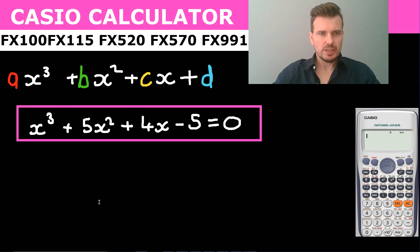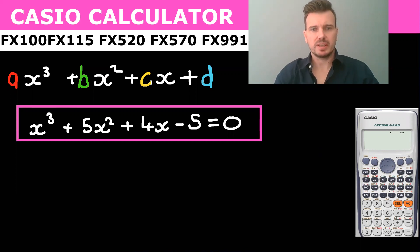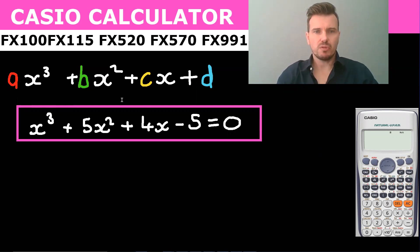So we have a cubic equation, which is ax³ plus bx² plus cx plus d. This is the format that the Casio recognizes. So your a is the number in front of your x cubed.